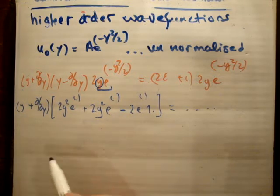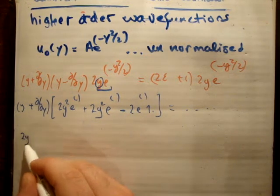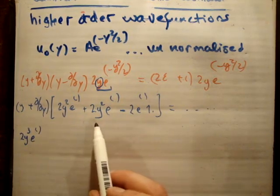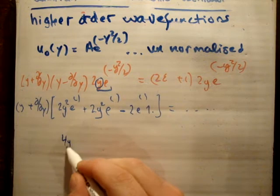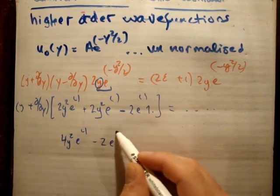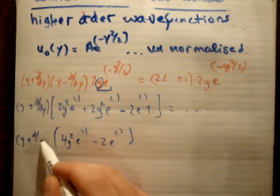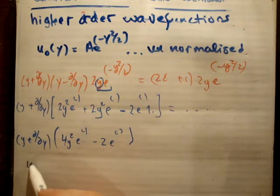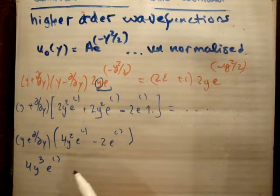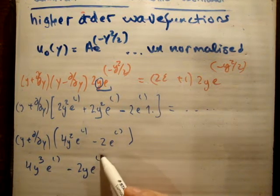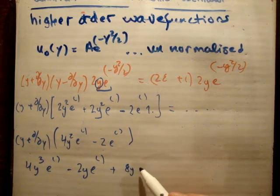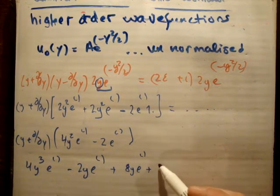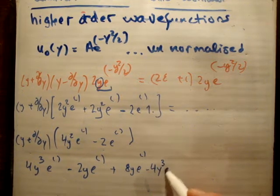Applying (y + d/dy) we get: y times 4y²e^(-y²/2) minus 2ye^(-y²/2), which gives 4y³e^(-y²/2) - 2ye^(-y²/2), plus d/dy of 4y²e^(-y²/2) minus d/dy of 2e^(-y²/2). For d/dy of 4y²e^(-y²/2), using the product rule: uv' gives 4y²·(-y)e^(-y²/2) = -4y³e^(-y²/2), and vu' gives 8ye^(-y²/2).